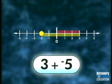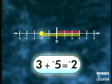As a result, we end at negative two. Therefore, the sum of three and negative five is negative two.